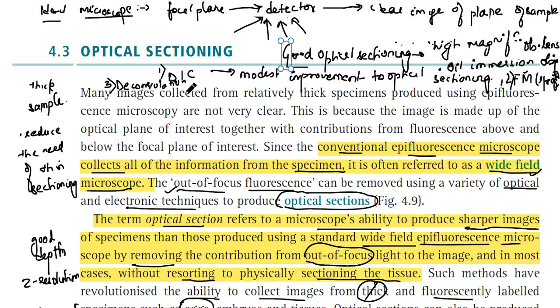Deconvolution significantly improves optical sectioning and helps to remove blur from the image. The fourth method is using clearing agents which possess a high refractive index — greater than 1.4 — for example, benzyl alcohol and benzyl benzoate. These clearing agents render the specimen transparent, allowing observation of internal structures.